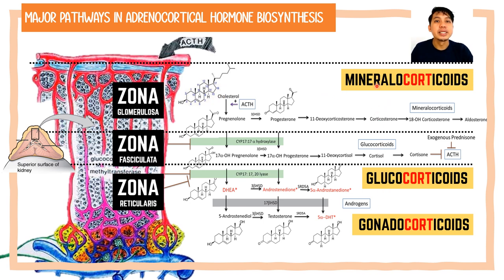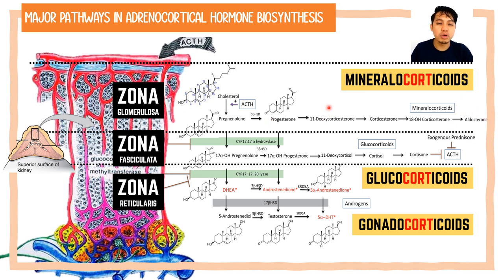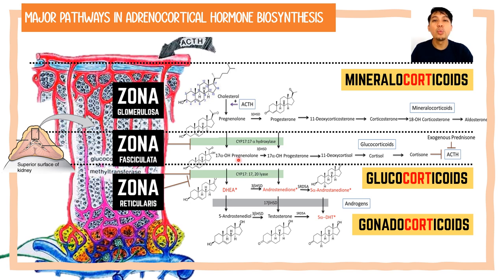In humans, the most important mineralocorticoid is aldosterone, produced in the zona glomerulosa. Further biosynthesis of pregnenolone and progesterone by the cytochrome P450 17-alpha-hydroxylase enzyme will form the major glucocorticoid, which is cortisol.